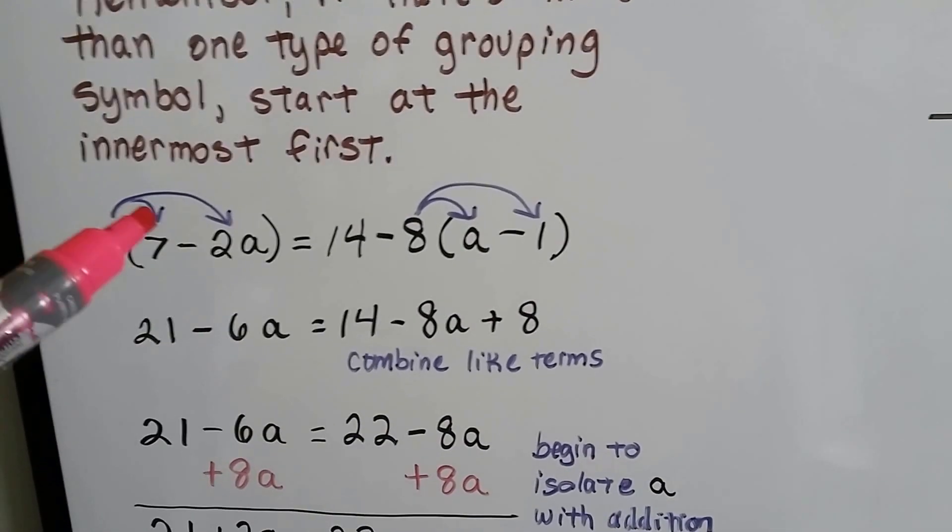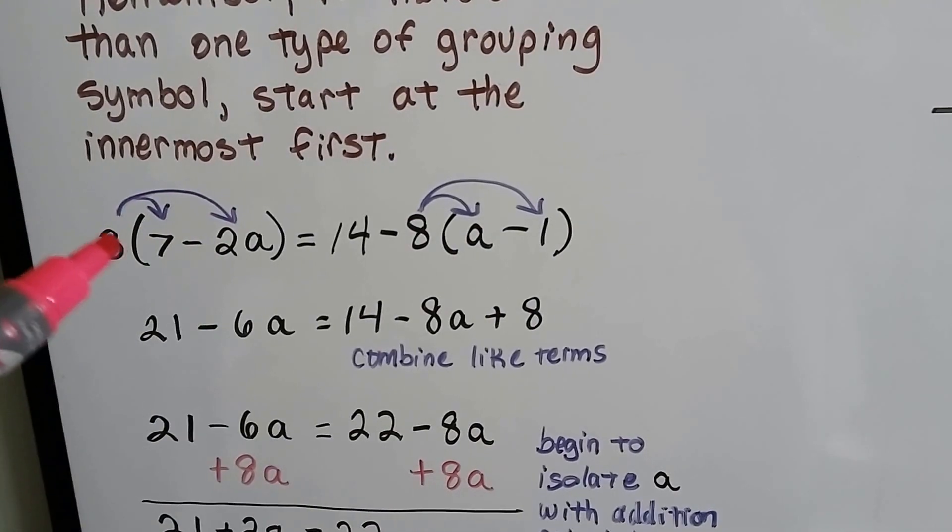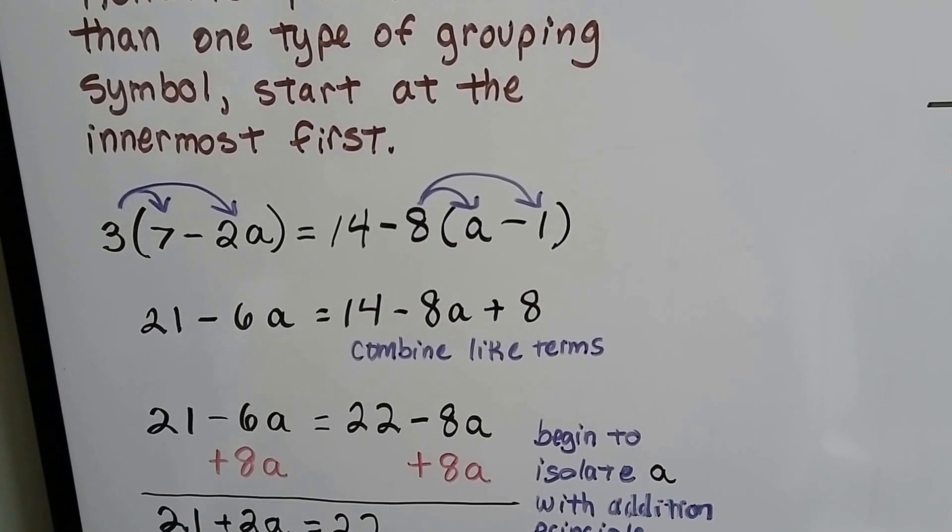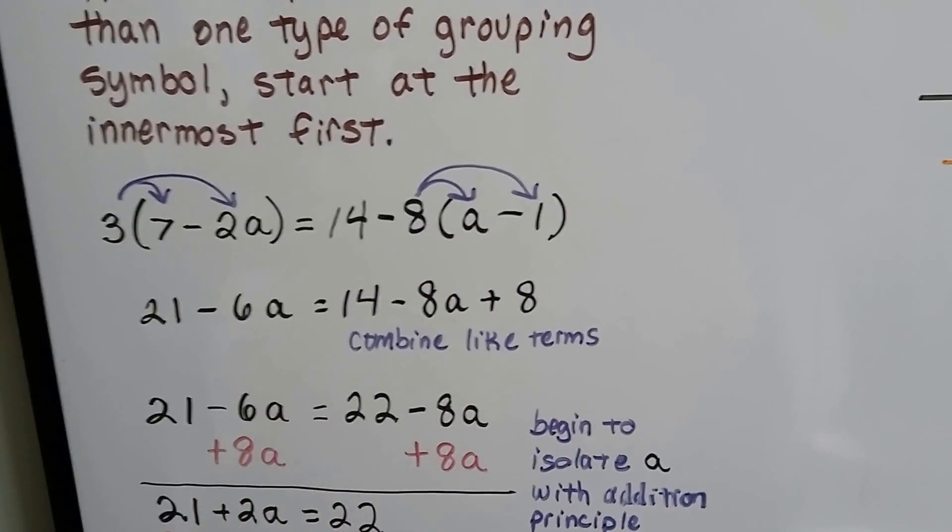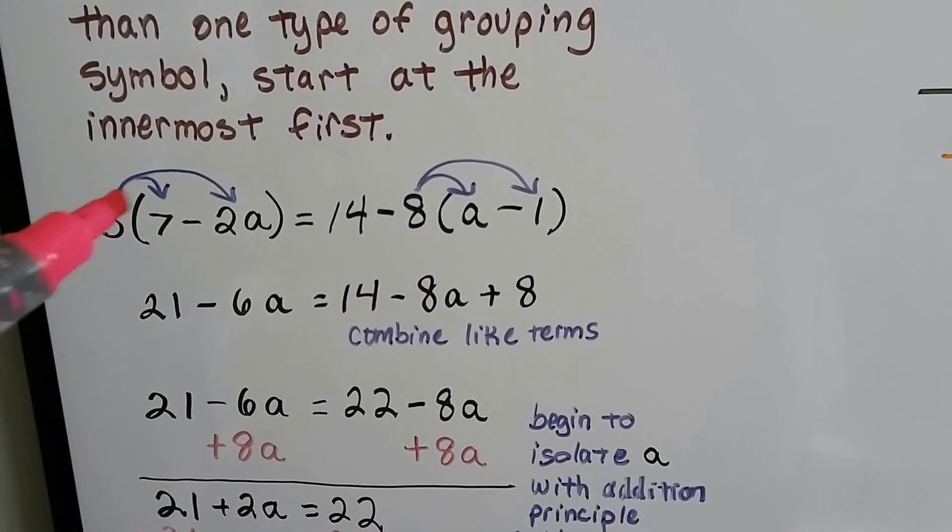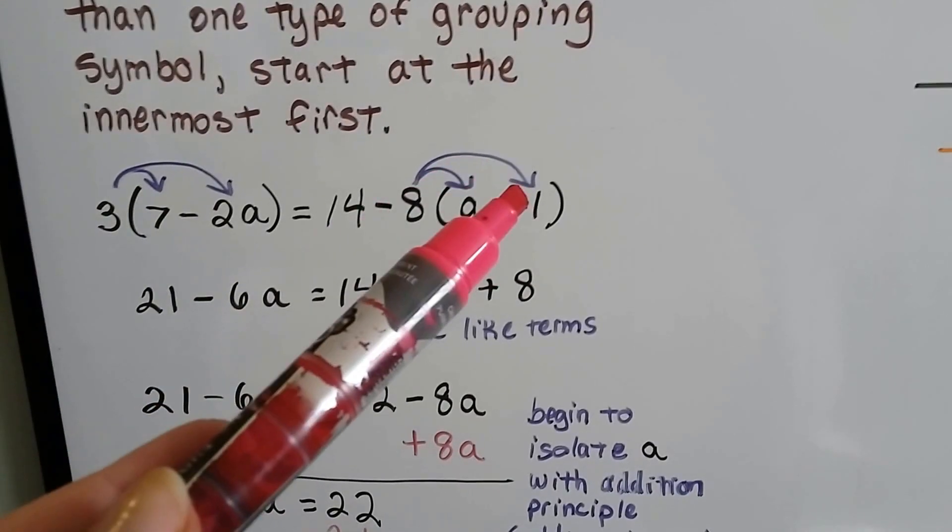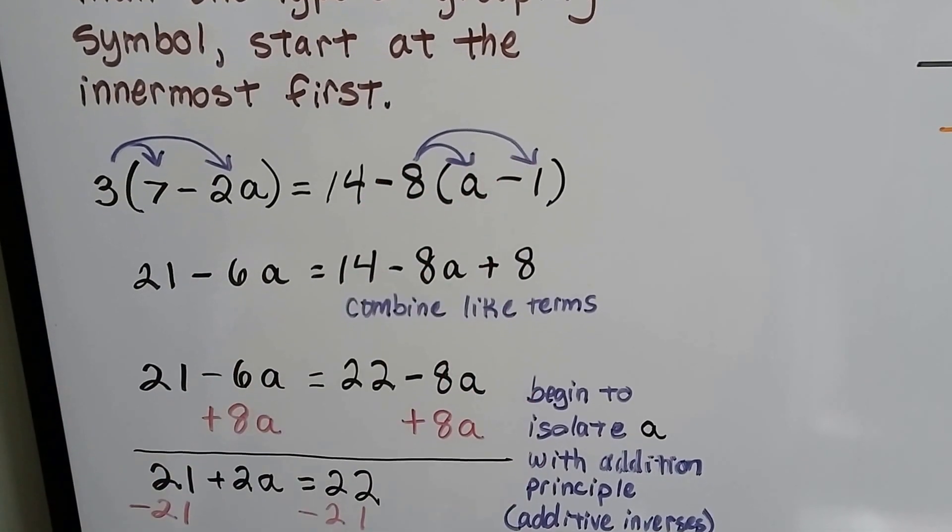If there's just regular parentheses, we just distribute this value that's in front of it to each one inside the parentheses. This would make 21, this would make 6a, this would make a negative 8a, and this would make a positive 8 because it's a negative and a negative.